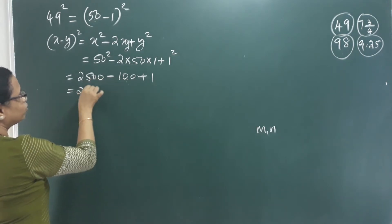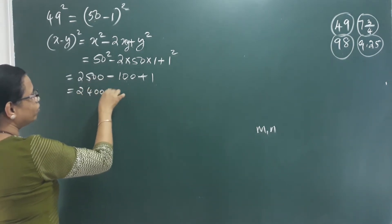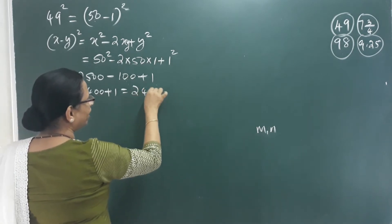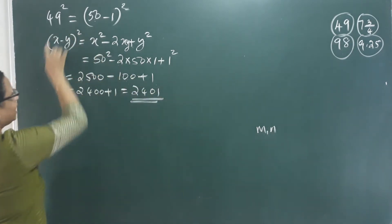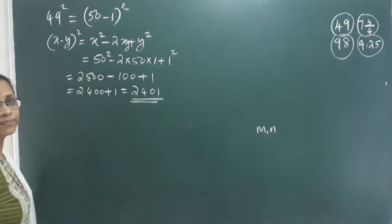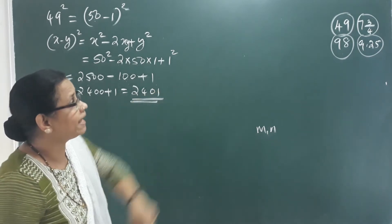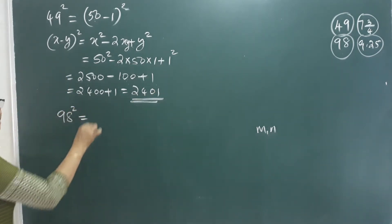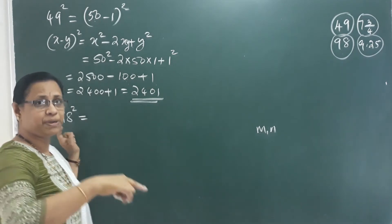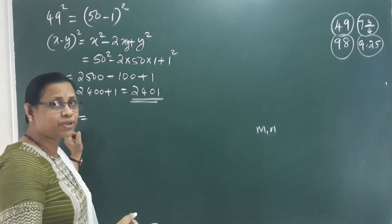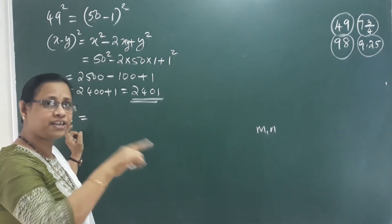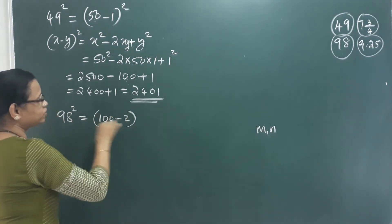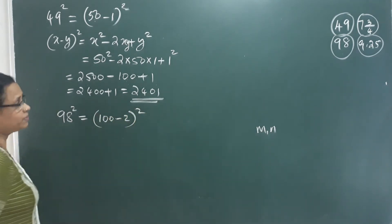So 49 squared equals 2401. Now for 98: 98 is written as 100 minus 2, whole square. What is the formula? x minus y square.